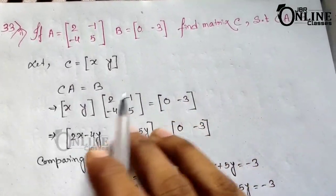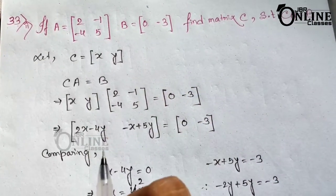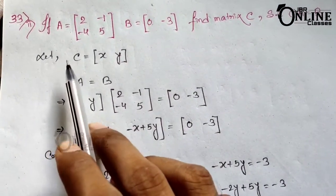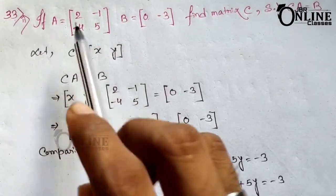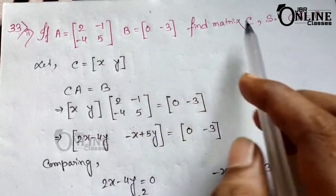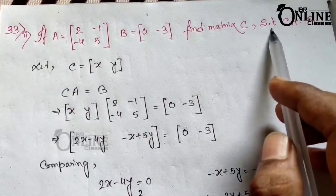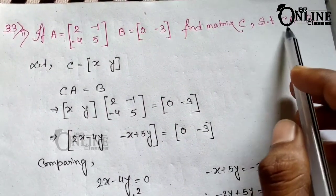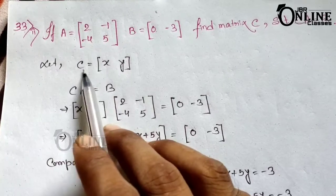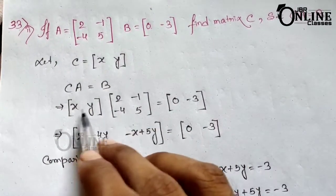Sum numbers 31 and 32 are similar to sum 30, so I hope you can solve those. Now going to sum number 33, part 2: if A equals [2, -1; -4, 5] and B equals [0, -3], find matrix C such that CA equals B.